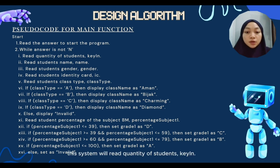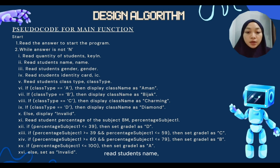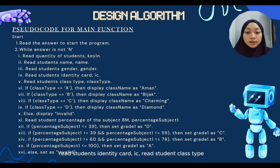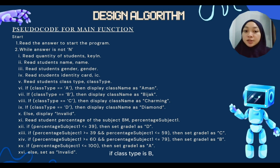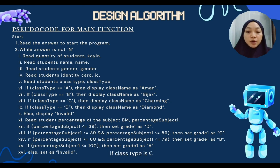The system will read the quantity of students (key in), read student's name, read student's gender, read student's identity card IC, read student class type. If class type is A, it will display class name as Aman; if class type is B, it will display class name as Bijak; if class type is C, it will display class name as Charming.